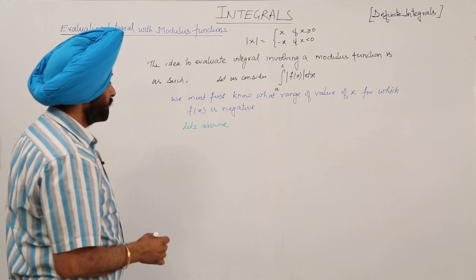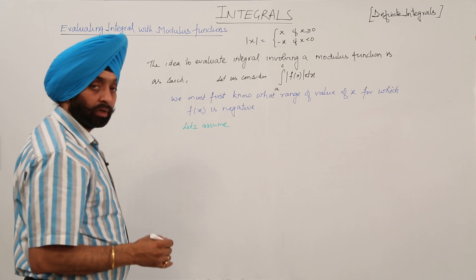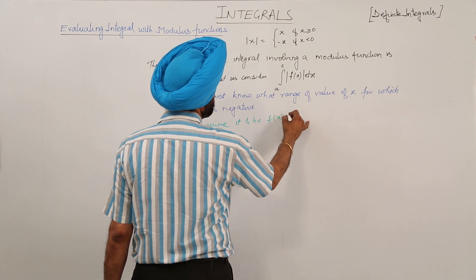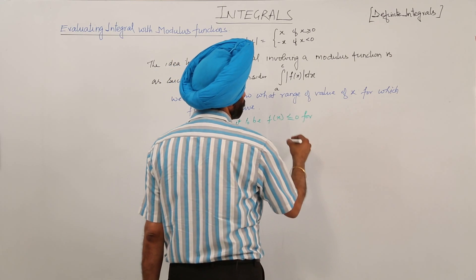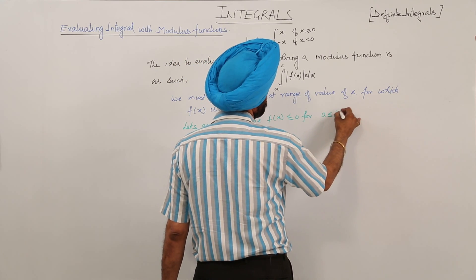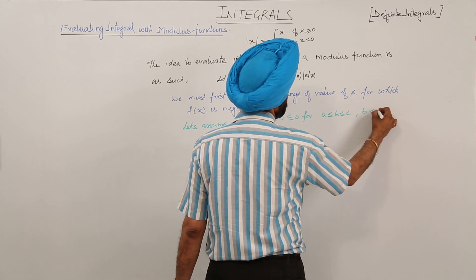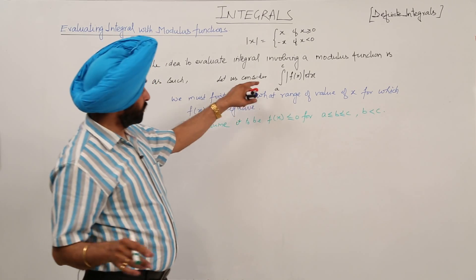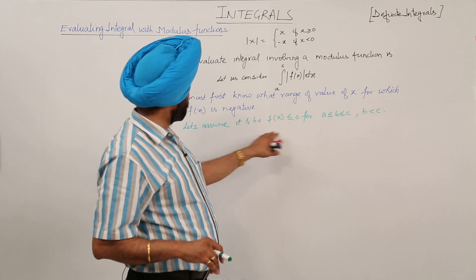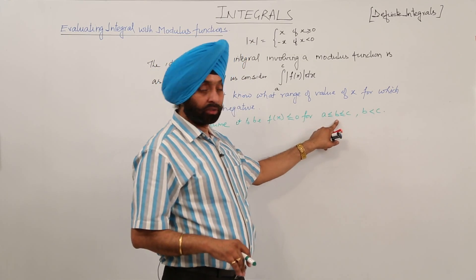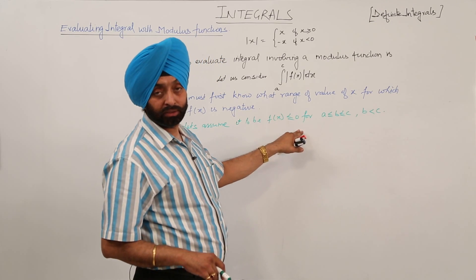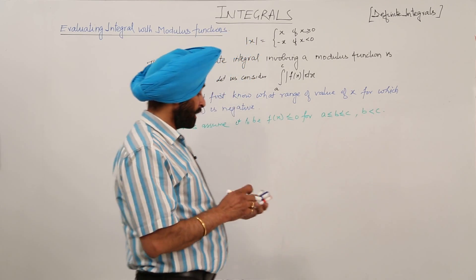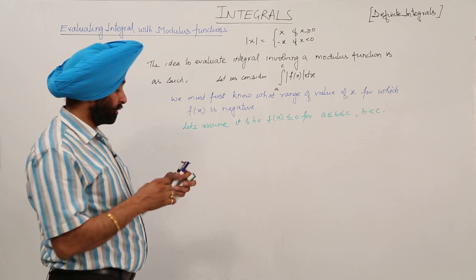Let's assume that f(x) is less than or equal to 0 for a ≤ x ≤ b ≤ c, where b is less than c. So b is a value in between a and c for which f(x) is less than or equal to 0.